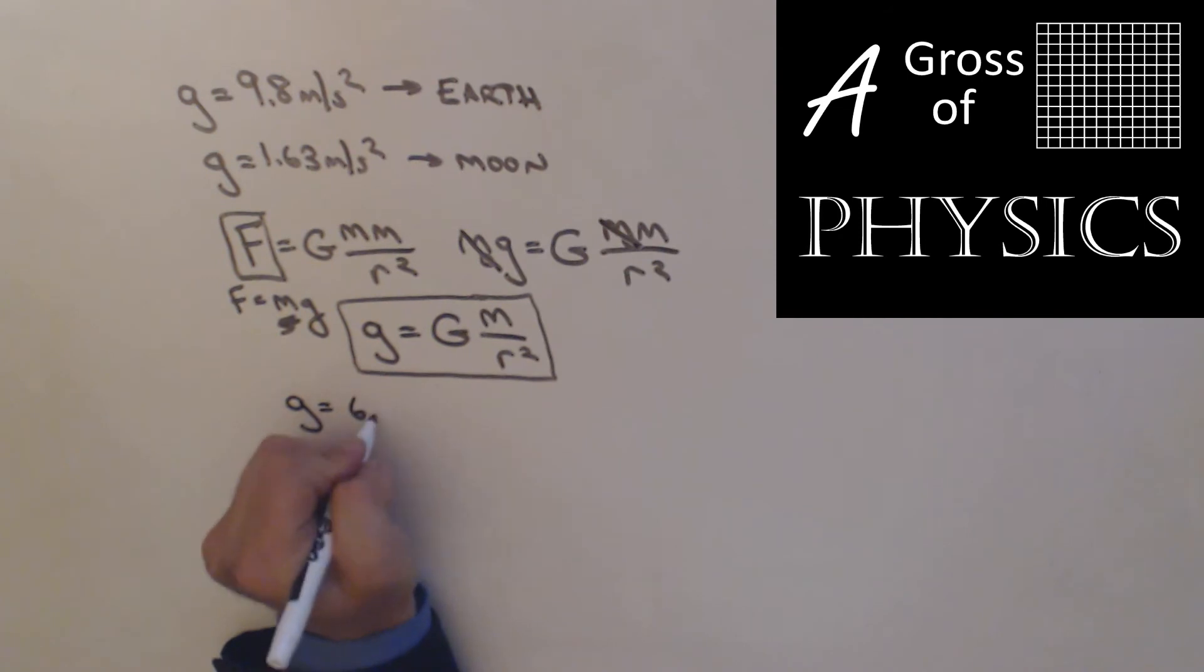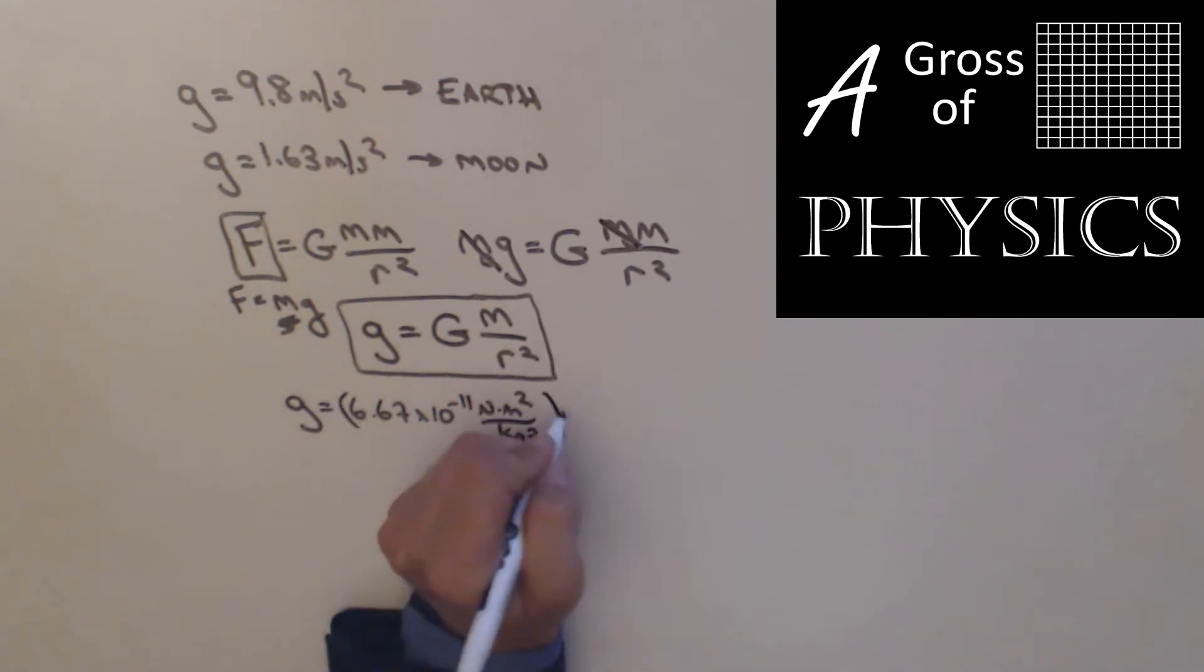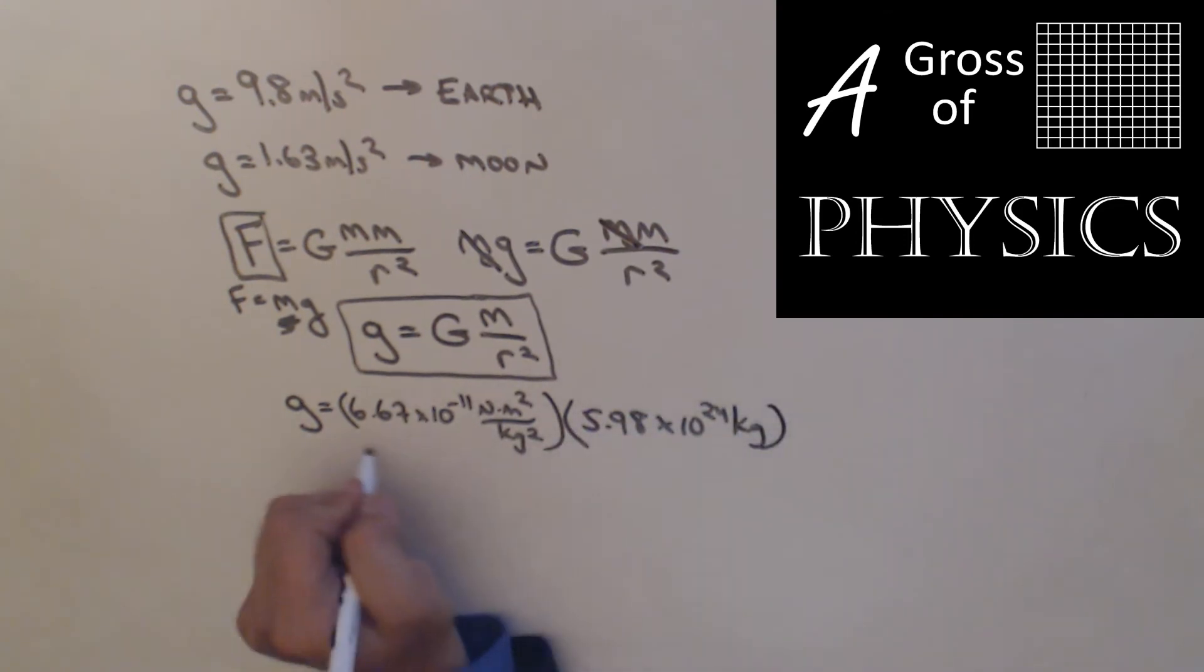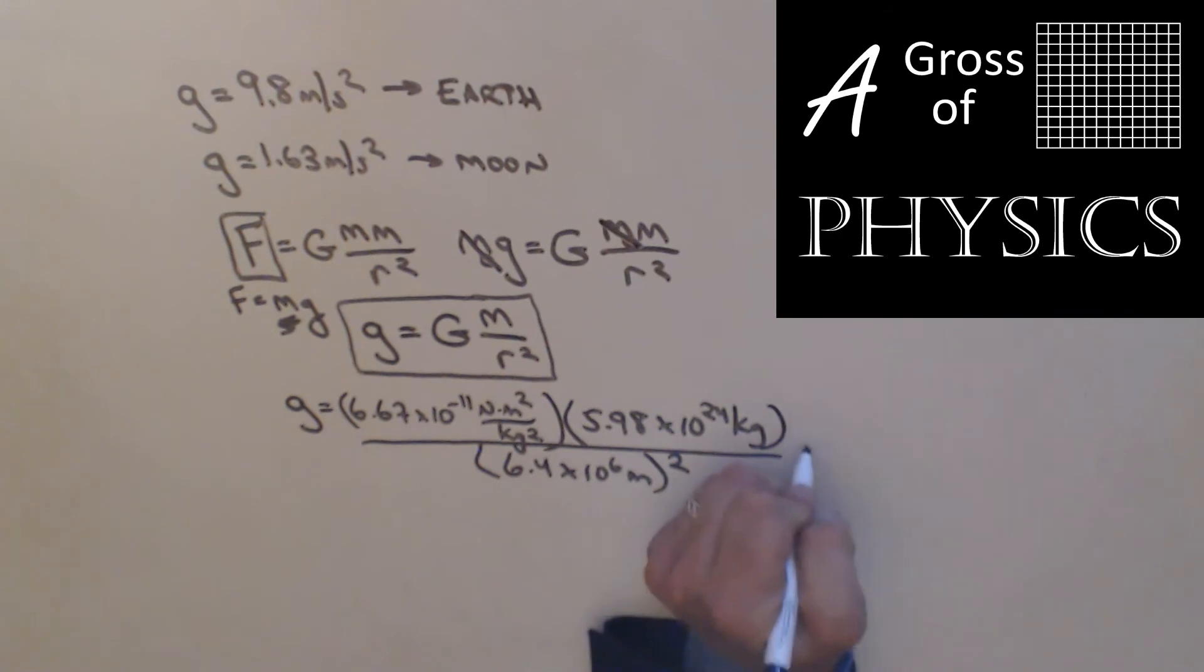g equals 6.67 times 10 to the negative 11 Newton meters squared over kilograms squared. The mass of the earth is 5.98 times 10 to the 24 kilograms, and the radius of the earth is 6.4 times 10 to the 6 meters, and we have to square it. Now the hardest part of this is dealing with the calculator. You have to use that EE button: 6.67 second EE negative 11 times 5.98 EE 24. I'm going to hit equal now, divided by 6.4 EE 6 squared. And I have for g, 9.74 meters per second squared.